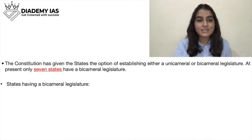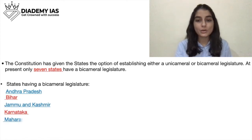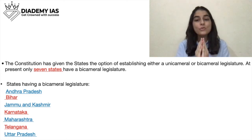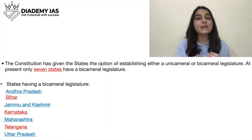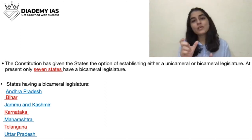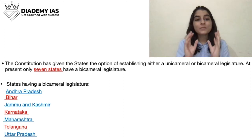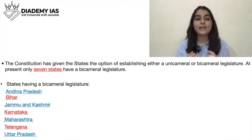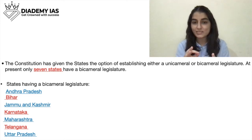The seven states which have a bicameral legislature are Andhra Pradesh, Bihar, Jammu and Kashmir, Karnataka, Maharashtra, Telangana, and Uttar Pradesh. You will have to remember the names of these seven states because sometimes you get a direct question or a statement in any question, so kindly remember the names of these seven states.